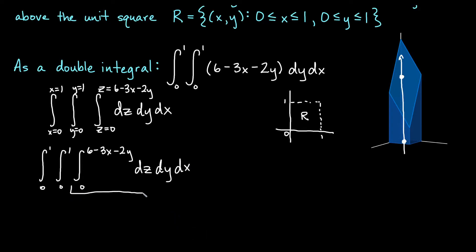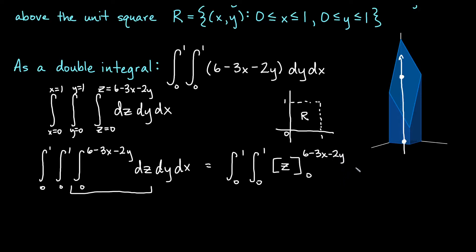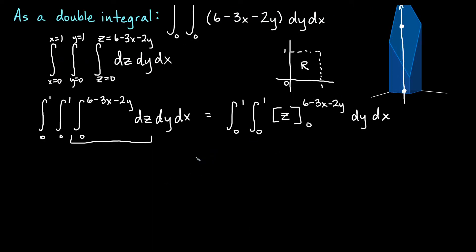We go from the inside out. Doing the innermost integral first means we keep the 0 to 1 integrals outside for now. Integrating dz — the antiderivative with respect to z of just the function 1 — gives us z. We evaluate z from 0 to 6 minus 3x minus 2y. Plugging in our bounds, since we just have z, we get the double integral from 0 to 1 of 6 minus 3x minus 2y minus 0, giving us 6 minus 3x minus 2y inside, integrated dy dx.